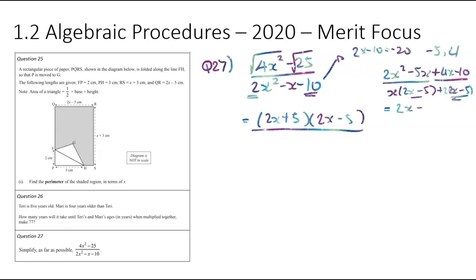So it will be 2x minus 5 and then x plus 2. So I'm going to put that on the denominator, 2x minus 5, x plus 2. I like this because I got a common bracket. So they're gone. And that will be 2x plus 5 over x plus 2.